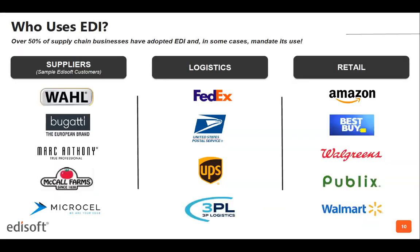So who is EDI for? Statistics consistently show over 50 percent of supply chain businesses have adopted EDI, and in some cases they mandate its use. Looking at a concatenated supply chain — suppliers, logistics providers, and retailers — the big box retailers on the right-hand side, such as Amazon, Best Buy, Walgreens, Publix, and Walmart, are typically the participants that mandate the use of EDI. For you to do business with them, they'll typically require you to exchange some of those common business documents we covered earlier using EDI.